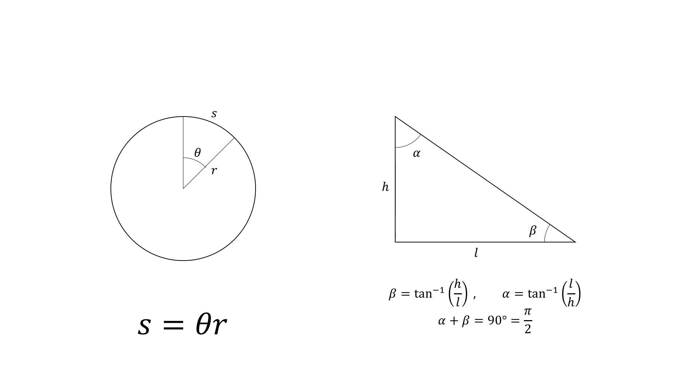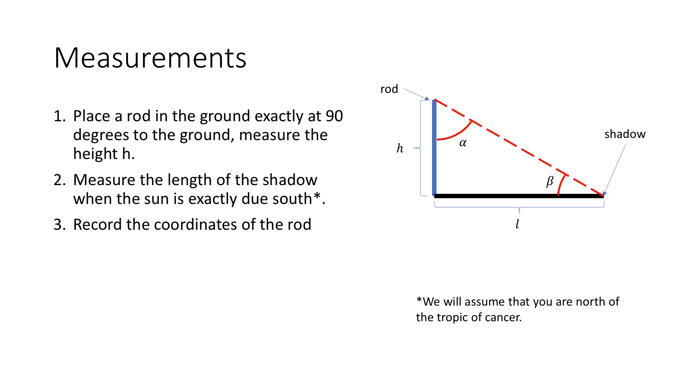So what we do is as follows: For the measurements, we stick a rod in the ground at 90 degree angle from the earth and measure the height h. When the sun is exactly due south, we measure the length l of the shadow. It is important the measurement is taken when the sun is due south, as this makes the maths as simple as I've shown in the previous slide. You want to record the coordinates and time as well.